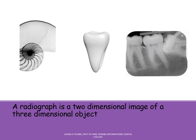A radiograph is actually a two-dimensional image of a three-dimensional object. A tooth structure is a three-dimensional object, so when you take a radiograph you're actually only seeing it in two dimensions — the buccal superimposes over the lingual, and there is superimposition of findings as well.